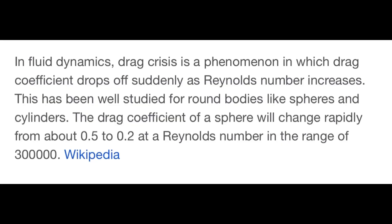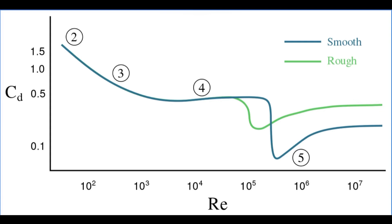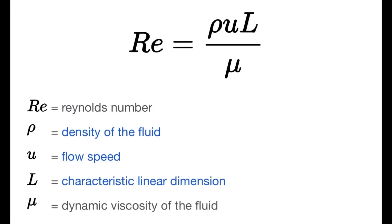Now it's time to explain the general physics of a knuckleball. We know that the knuckleball moves erratically, but why? The first thing to consider is the drag crisis, defined as when the drag coefficient drops significantly at a higher Reynolds number. It occurs earlier in a rough ball. The Reynolds number equation is Re = ρεL/μ, where Re is the Reynolds number, ρ is density, ε is flow speed, L is the characteristic limiter dimension, and μ is the dynamic viscosity of the fluid.